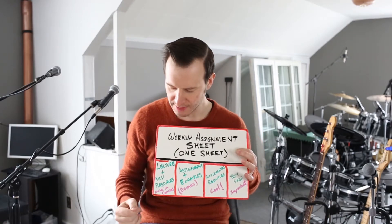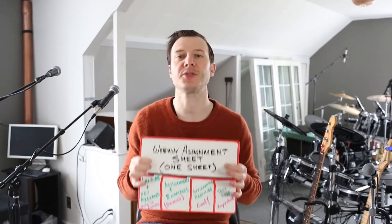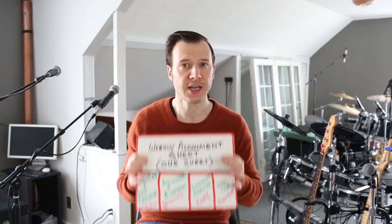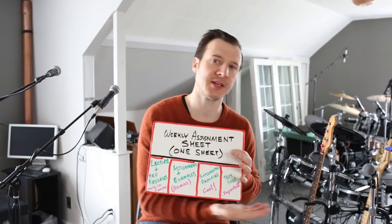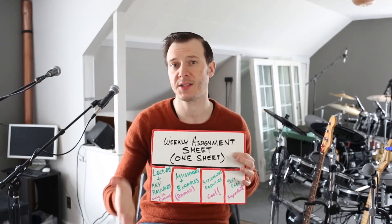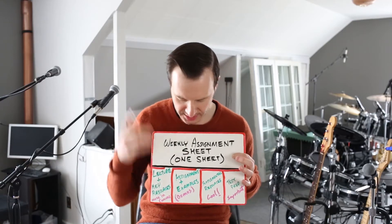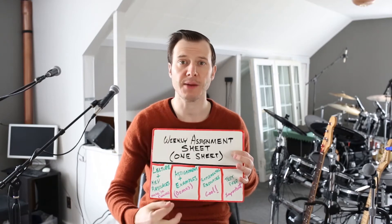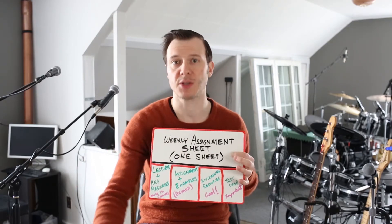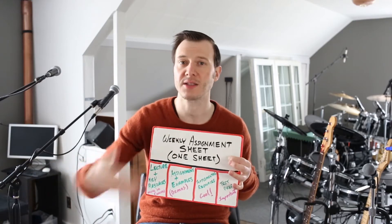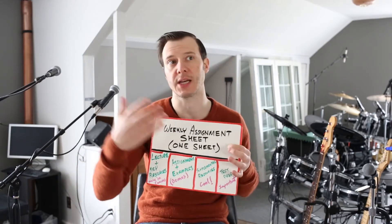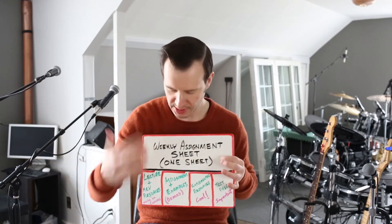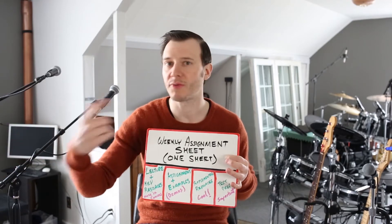Let me walk through the assignment sheet. First, it will have lectures and key resources — things you absolutely need to watch, take notes on, and think about. They relate to everything we're working on that week and to the key competencies of the course. Second, it will have your assignment for the week. Some weeks there will probably be two assignments, along with examples related to that assignment — for instance, if we're talking about sidechain compression used for ducking or in an EDM context to move the bass out of the way of the kick drum.